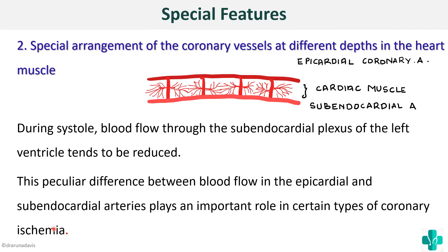This special arrangement of coronary vessels is another reason why blood flow to the heart decreases during systole. During systole, blood flow through the subendocardial plexus of the left ventricle tends to be reduced, and this difference between blood flow in epicardial and endocardial arteries plays an important role in certain types of coronary ischemia. From these two points — phasic blood flow and special arrangement — we know the subendocardial region has less blood supply during systole, which is why infarcts mainly occur in the subendocardial region.